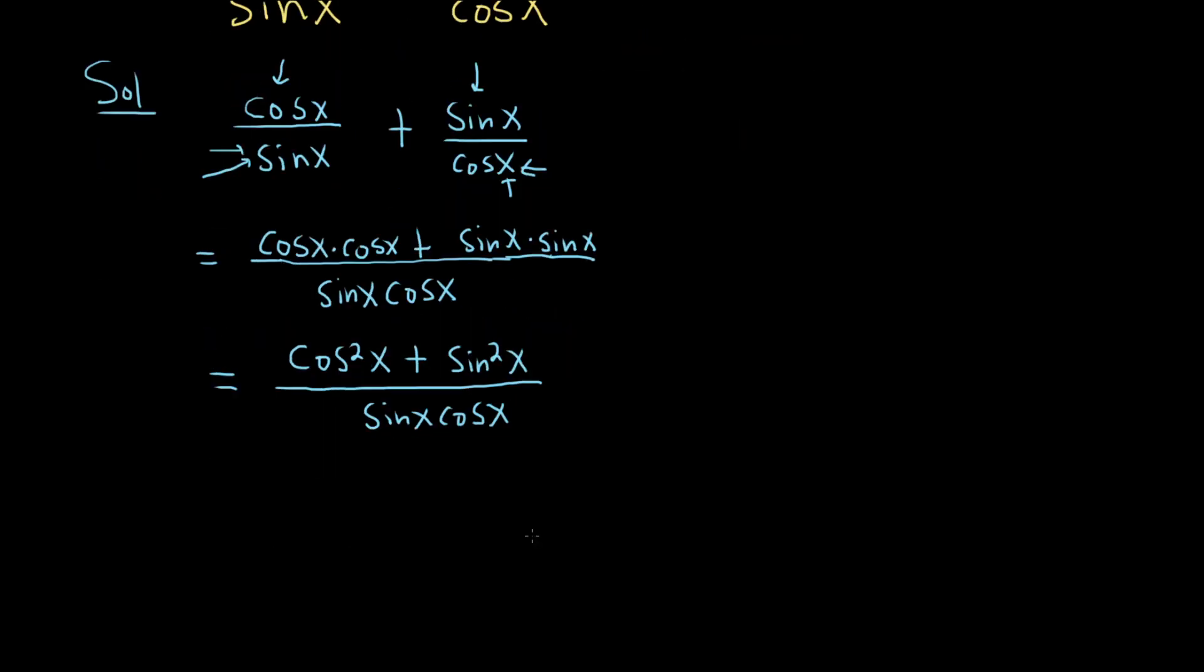And this is everyone's favorite identity. It's like the one identity that everyone knows. Cosine squared plus sine squared is equal to 1, all over sine x, cosine x.